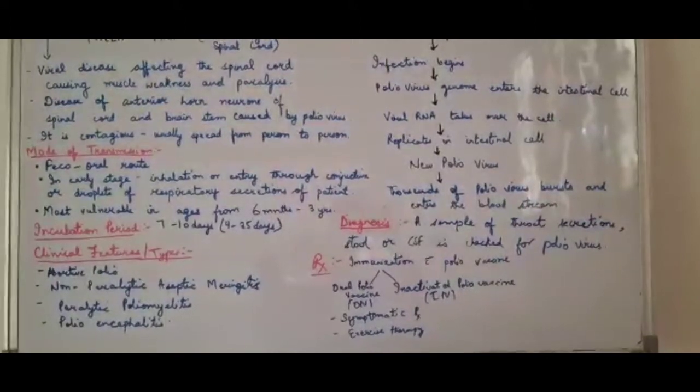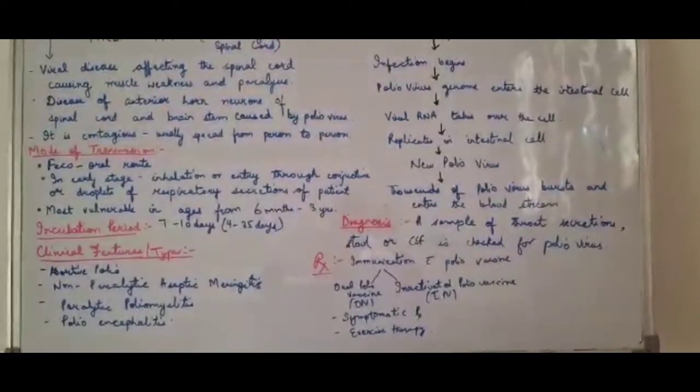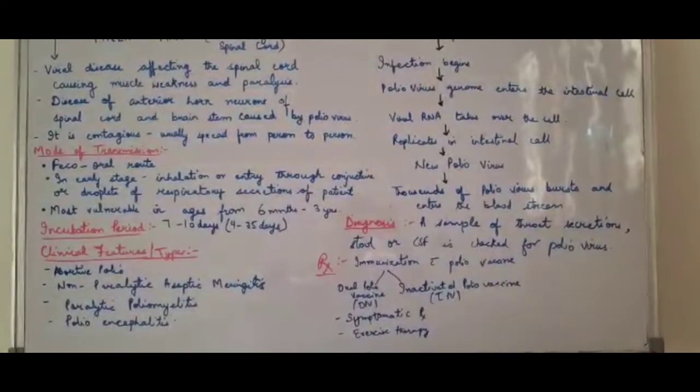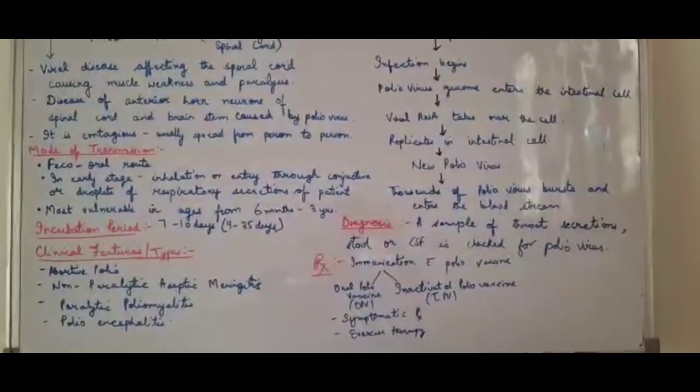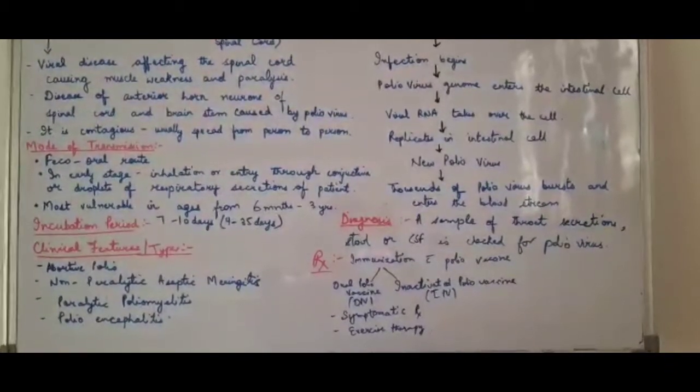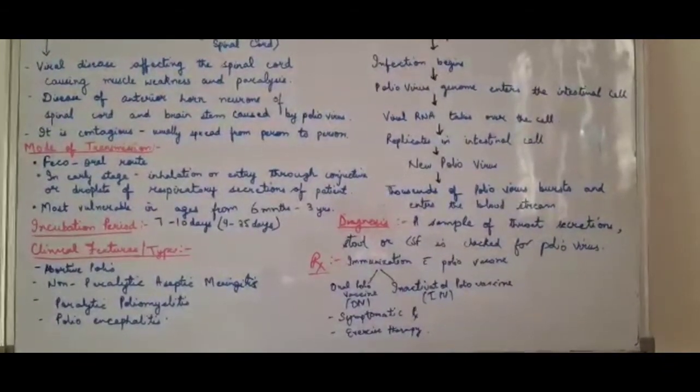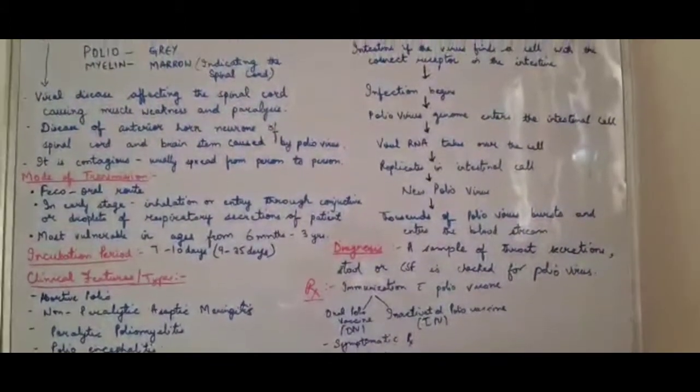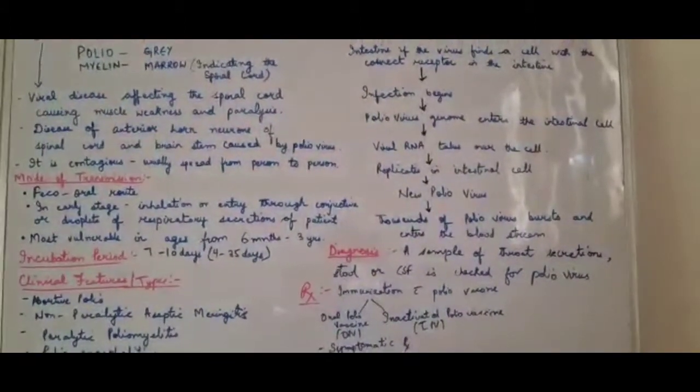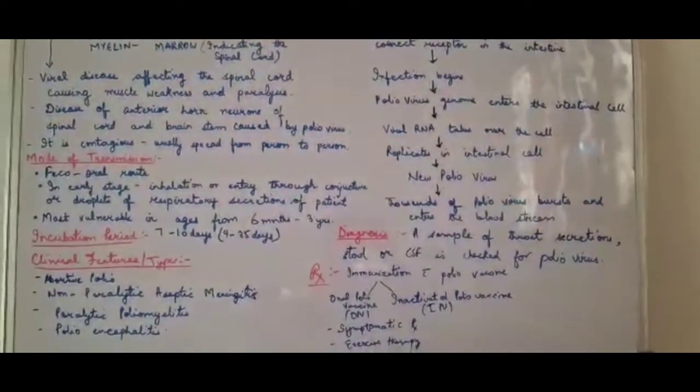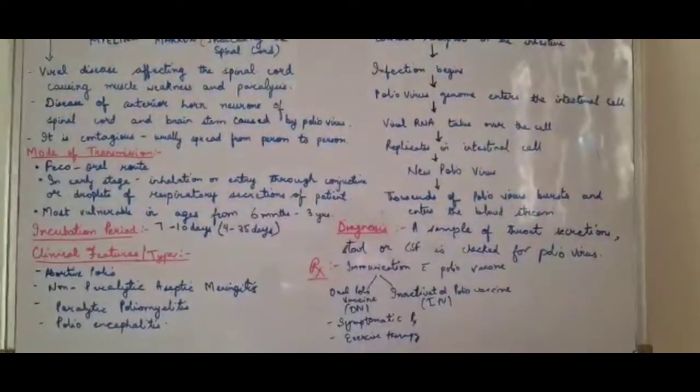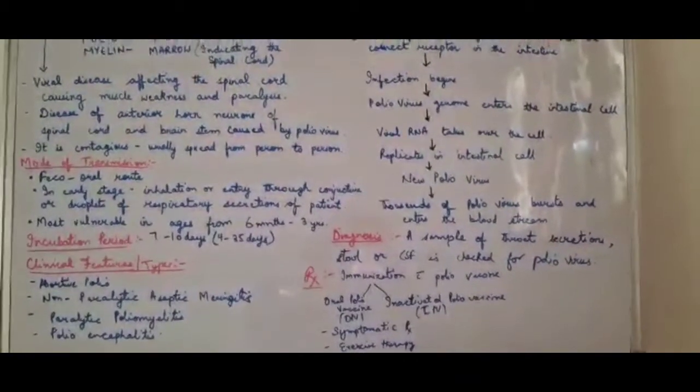Third is paralytic polio. In paralytic polio, there is paralysis in different parts of the body. Why is there paralysis? Because the cells in the brain and spinal cord, the anterior horn cells which we talked about earlier, are destroyed by the polio virus. That is why we call it paralytic poliomyelitis.